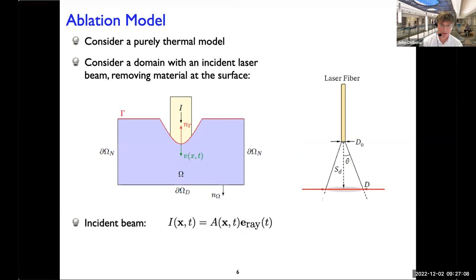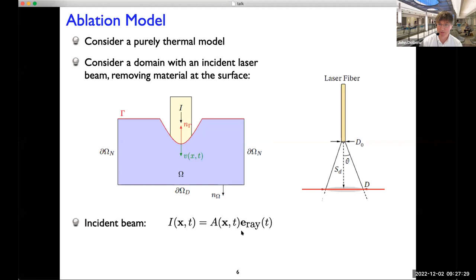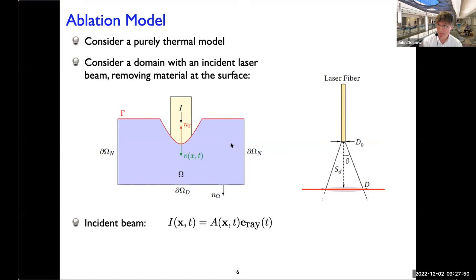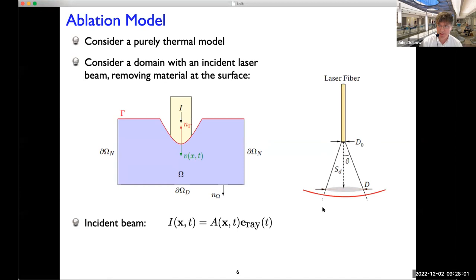We developed a relatively simple model for thermal ablation. We have a domain interacting with an incoming laser beam, and we're interested in how the surface gamma evolves with space and time. We assume we know the beam profile in terms of incoming energy amplitude spatially and as a function of time to match the 20 Hz frequency. The width of the beam expands as we move away from the fiber tip, which is vital to include because as material is removed, the effective distance between fiber tip and sample increases.